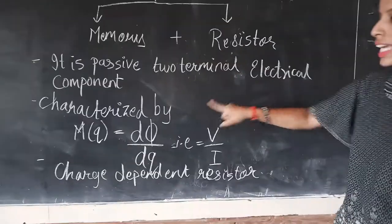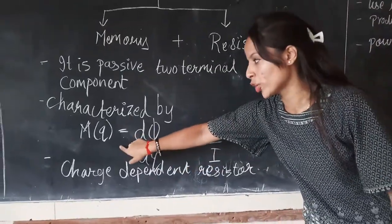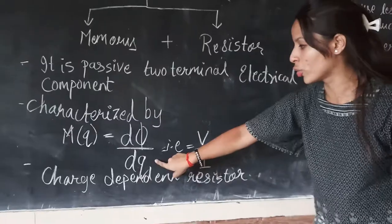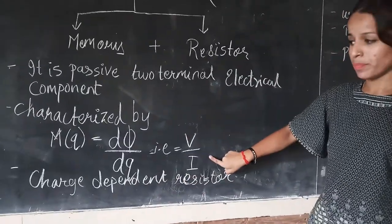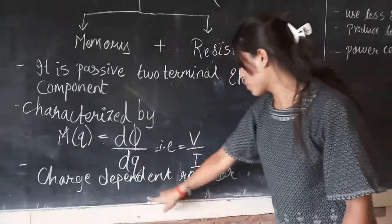It is characterized by the equation M(Q) equals dΦ upon dQ, that is V upon I. It is a charge dependent resistor.